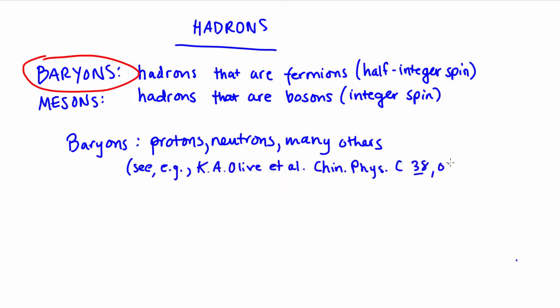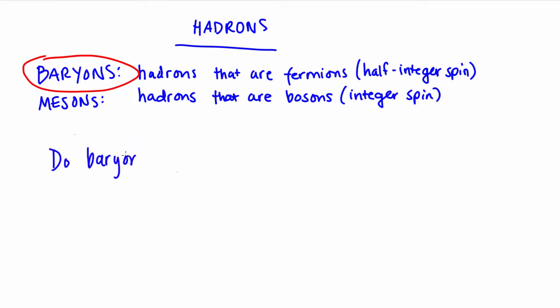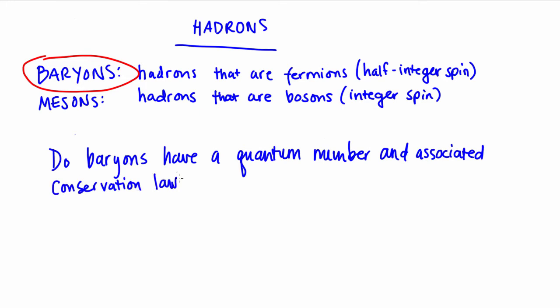Now, following what we learned about leptons, we might expect to find some kind of baryon number conservation law. How might we test this? We could look for reactions that might violate this conservation law. For instance, we could use free neutrons as our test case.